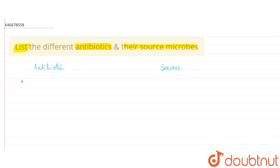First, number one: Penicillin. Penicillin is derived from Penicillium.